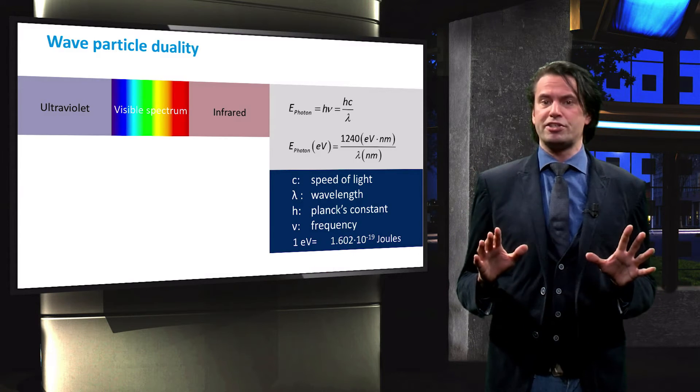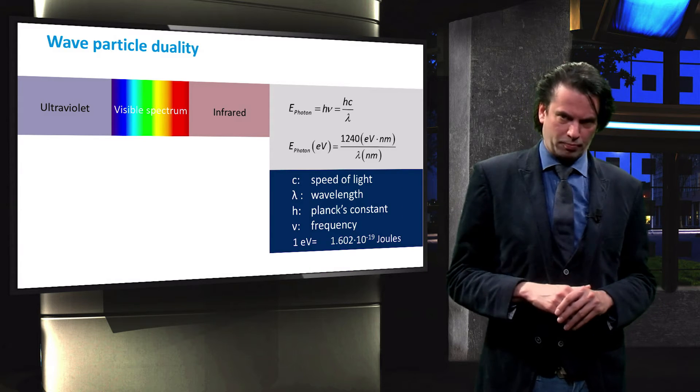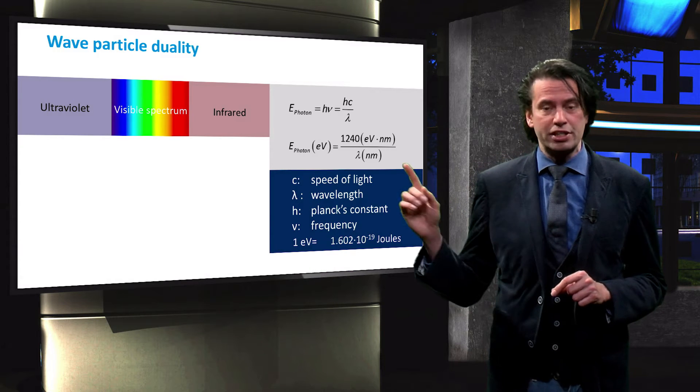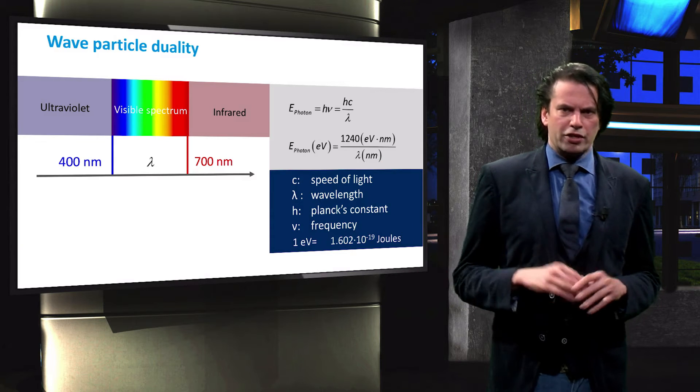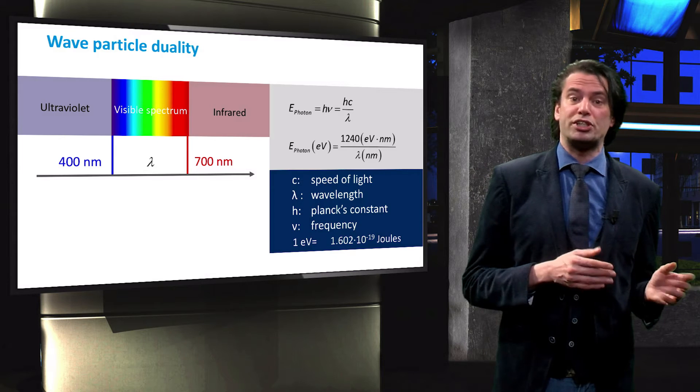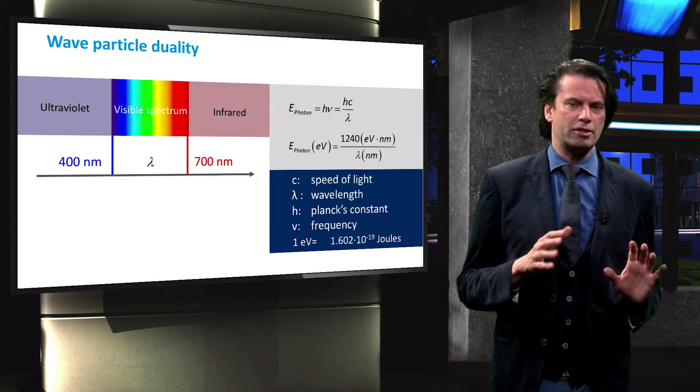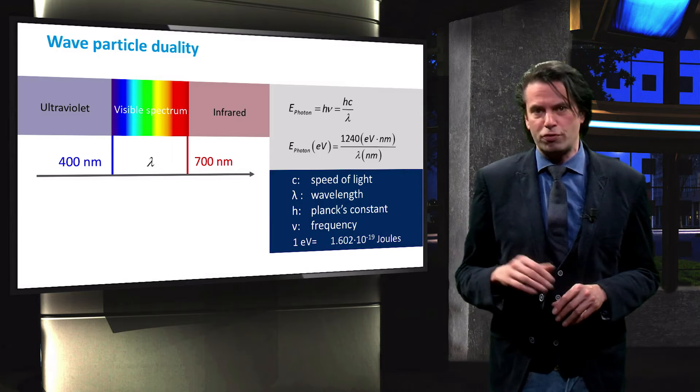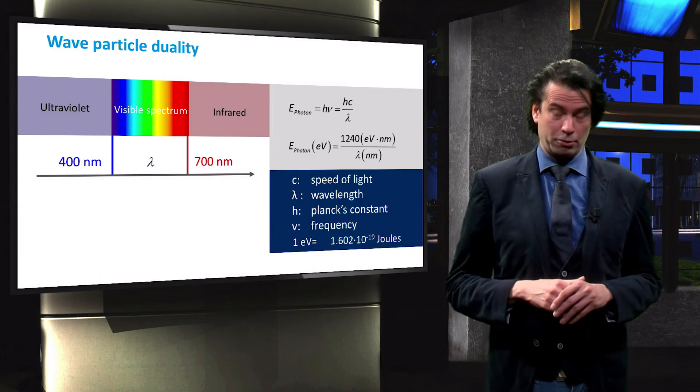If we look for instance at the visible spectrum, the arrow indicates the direction of increasing wavelength. The visible spectrum ranges from blue photons, which have a wavelength of about 400 nanometers, to red photons, with a wavelength of about 700 nanometers.